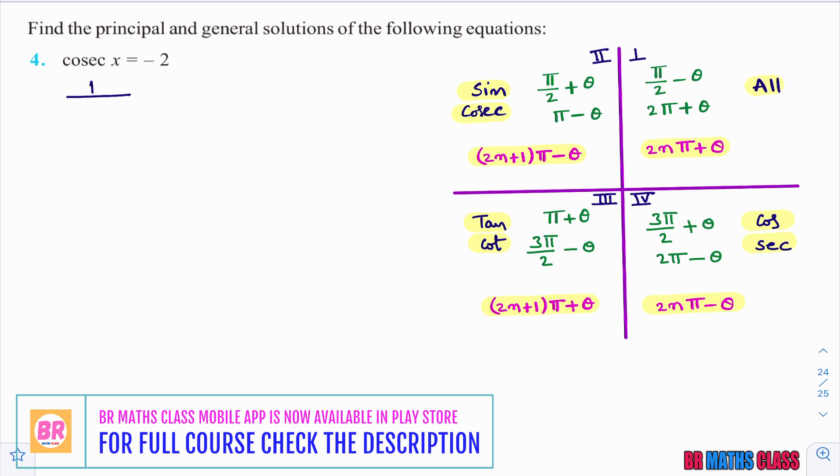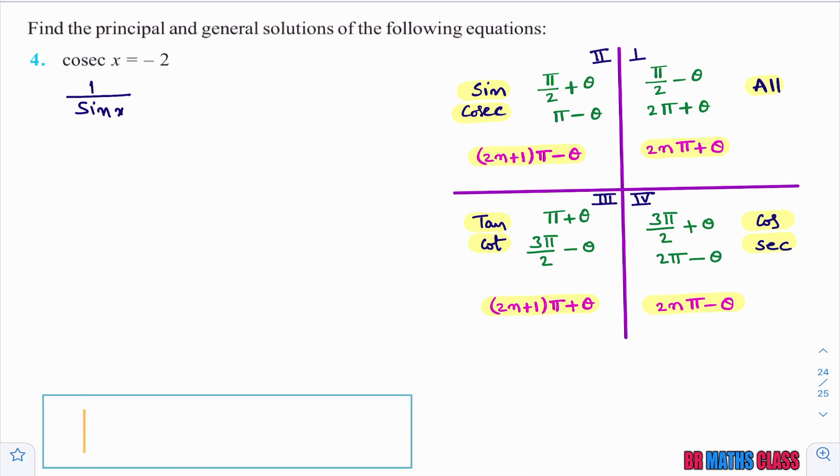Cosecant x reciprocal is 1 by sine, so cosecant x can be written as 1 by sine x. From this, what is sine x? Sine x equal to minus 1 divided by 2.